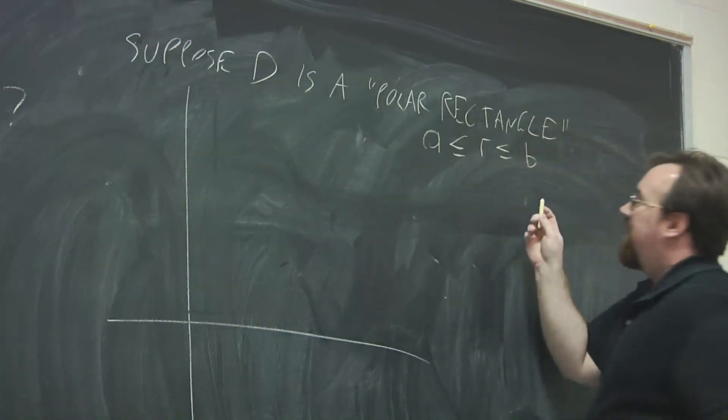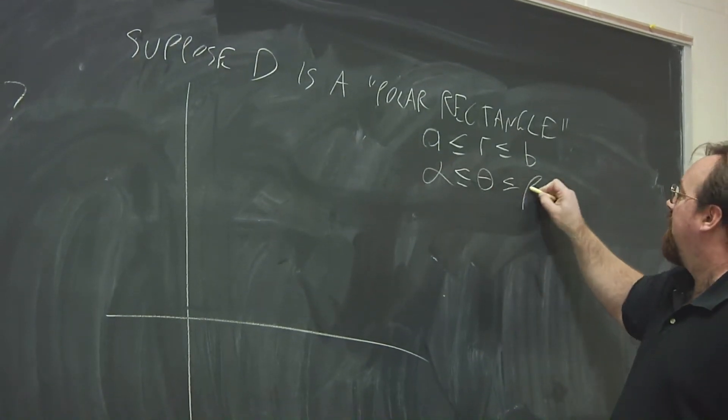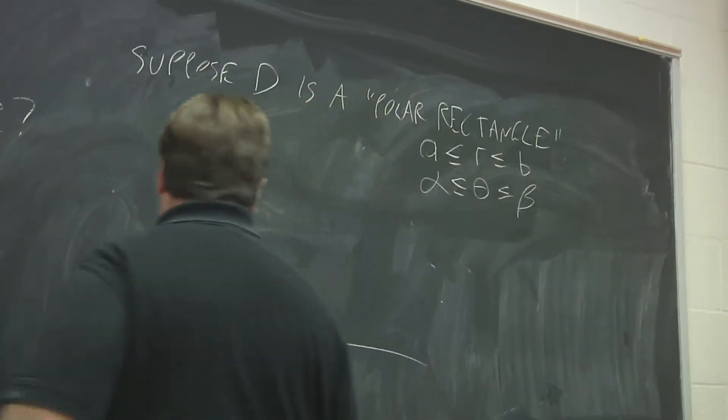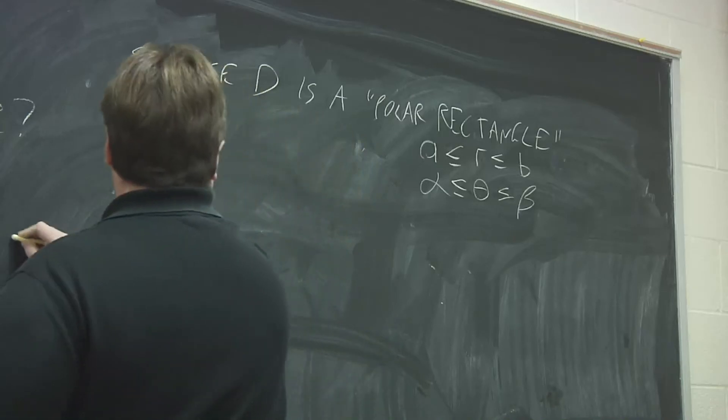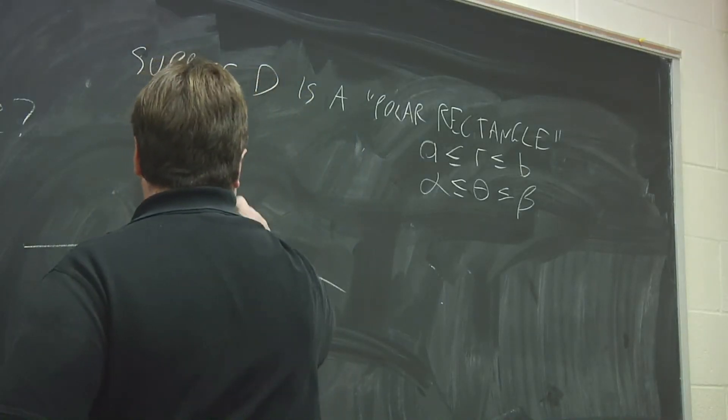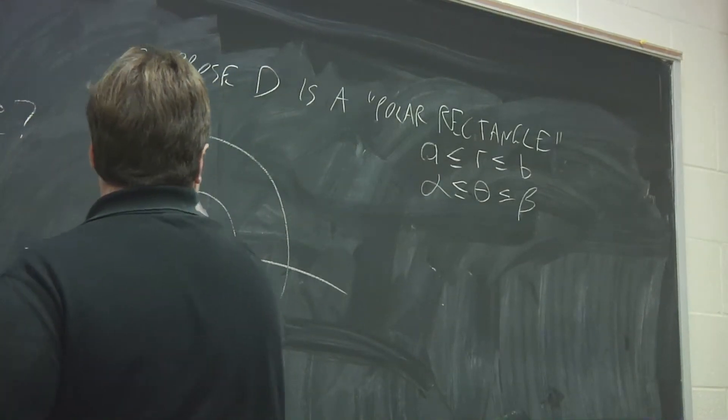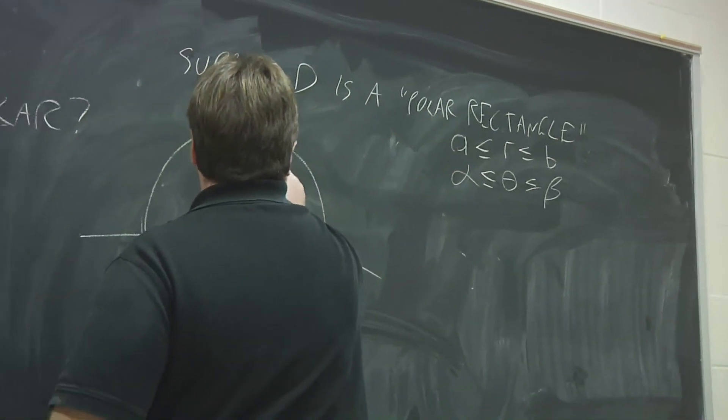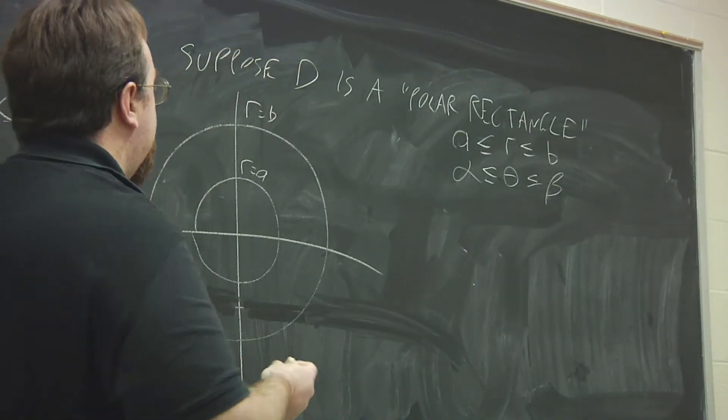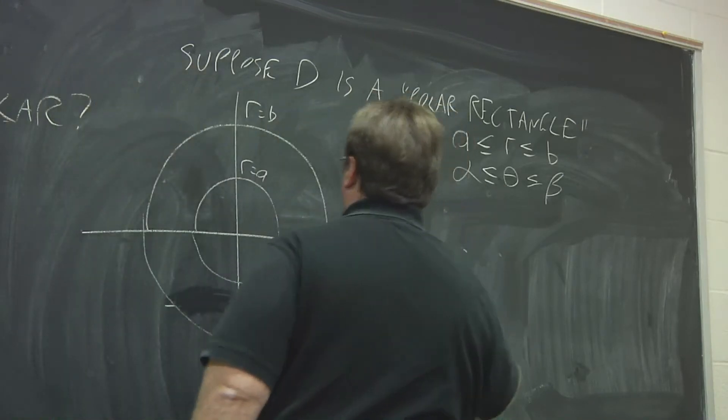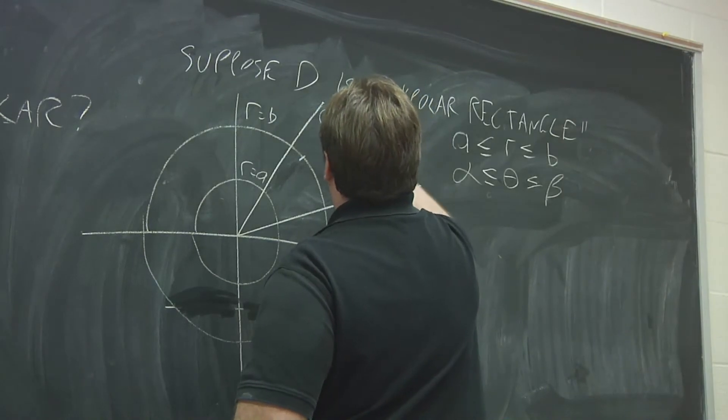So restrict r to a range of values from a to b, and we're going to restrict the angle theta also to a range of values. So when you're restricting r to a range of values, you're looking at the area between two concentric circles. Here's r equals a, r equals b. But then we're going to restrict even further, we're going to restrict the angle to a certain interval. So here's theta equals alpha, theta equals beta.